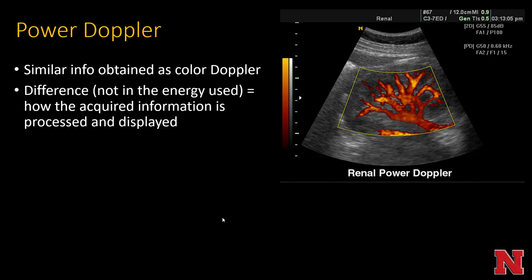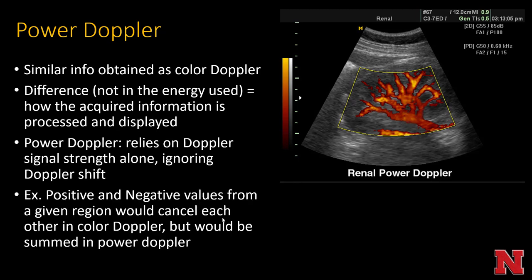Power Doppler provides similar information to color Doppler but importantly differs in how information is acquired, processed, and displayed. Power Doppler relies on Doppler signal strength alone, ignoring Doppler shift — it is not directional. Positive and negative values that would cancel each other out in color Doppler are instead summed in power Doppler. This tells you simply whether flow exists in an area — for example, confirming a kidney has flow — without indicating direction.